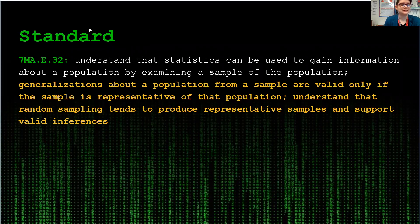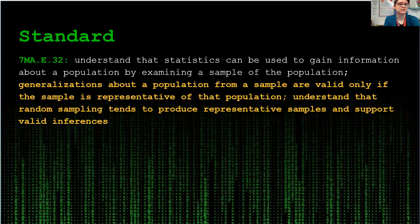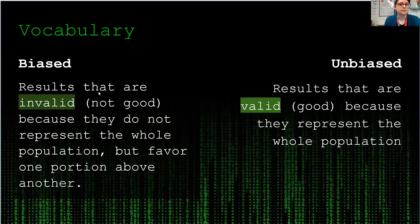We are still in standard 7 MAE32: generalizations about populations from a sample are valid only if the sample is representative of that population. Our two words for this video are biased and unbiased.